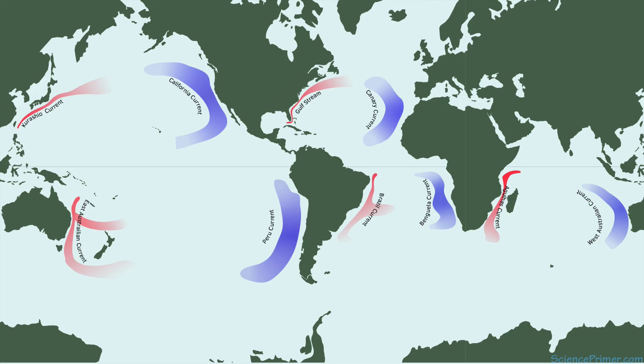The western boundary currents transport heat from low latitudes to higher latitudes. And this transport of heat by the water is a major reason the climates in parts of Europe and along the west coast of North America are mild.